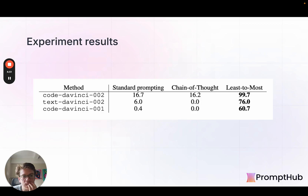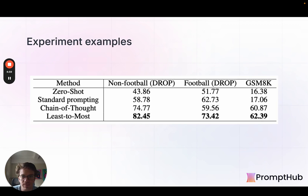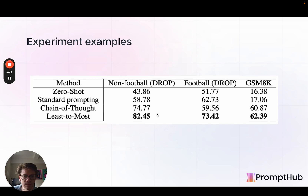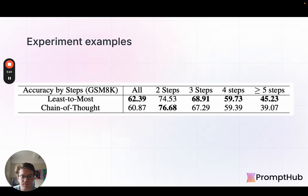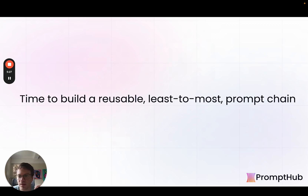Next up was a task called the SCAN dataset — not super important, so we'll skip past that one. Then the last set is a bunch of math reasoning datasets — three datasets here. Least-to-most usually outperforms chain-of-thought; it's closer in some areas than others. And when we extend these to have more reasoning, least-to-most tends to do even better, and that delta between the two increases.